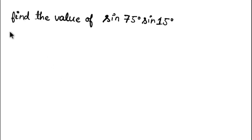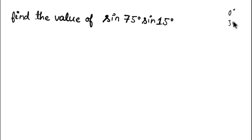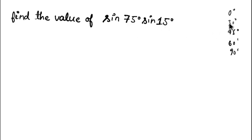Hey guys, welcome back to Solution Mitra. Here is a question for today: find the value of sine 75 into sine 15. The problem is we don't know the value of sine 75 and sine 15, but we know the value of standard angles like 0°, 30°, 45°, 60°, and 90°. We know the trigonometric relations of these angles, so we have to change 75° and 15° into these angles.